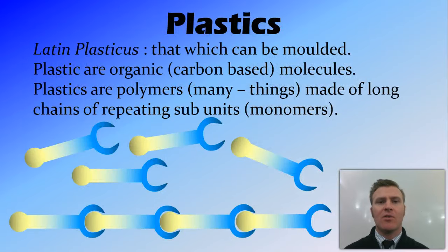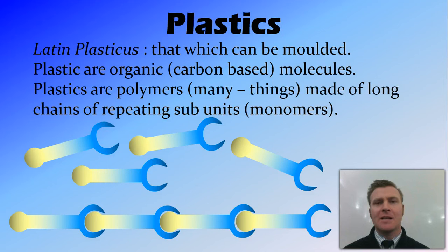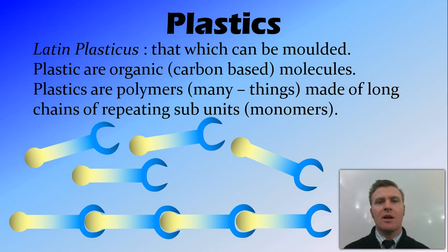The word plastic comes from the Latin word 'plasticus', meaning something that can be molded. Plastics are organic, carbon-based molecules and they're polymers — 'poly' meaning many, 'mer' meaning units — so they're made of many repeating subunits called monomers. Many monomers react together in a polymerization reaction to form a polymer.